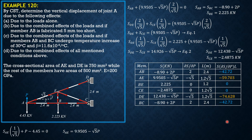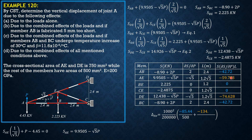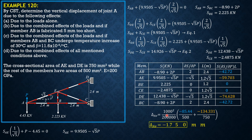Therefore, the vertical displacement at A due to loads alone equals (1000²/E) × [(−85.44/500) + (−134.331/750)], where −85.44 is the sum of −42.72 and −42.72 (members AB and BC), and −134.331 is the sum of −59.703 and −74.628 (members AE and DE), with E = 200,000 MPa. The result is −1.750 mm, indicating a downward deflection.